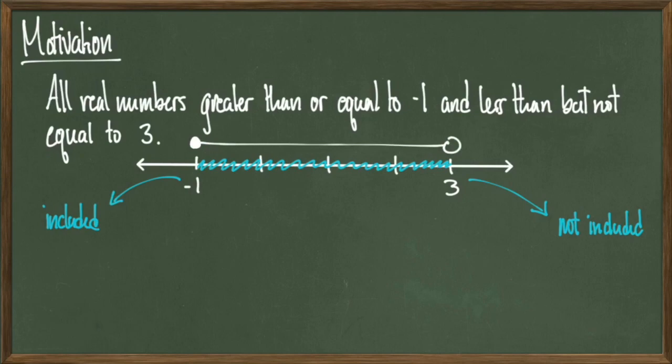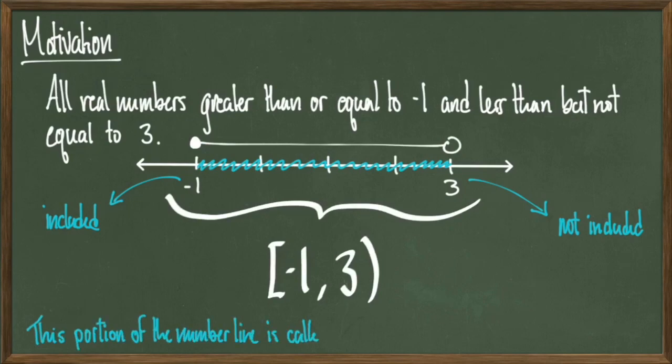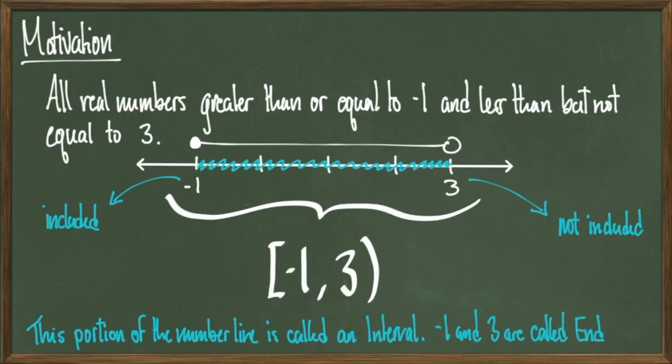The way to denote this segment of numbers without drawing it on paper is to write it with a square bracket around negative 1 and a right parenthesis around 3. This notation describes the set of numbers between negative 1 and 3, which includes negative 1 itself but does not include 3. We call such a collection an interval. The negative 1 and 3 are our buffers that tell us where the set begins and ends, so we call these numbers endpoints.